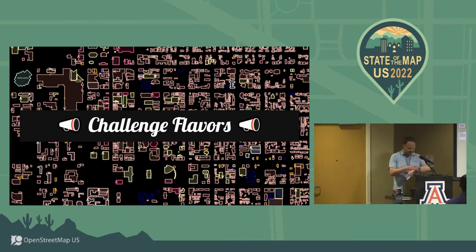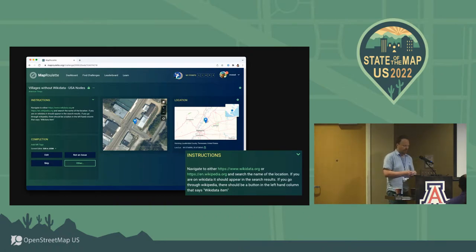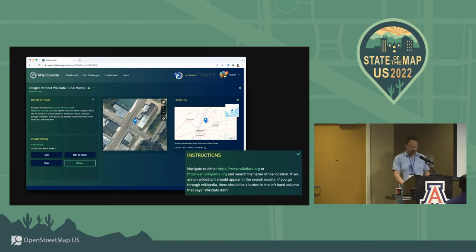So I want to talk a little bit about challenge flavors. The traditional one: check this, fix that — the mapper fixes the map, uploads, returns to MapRoulette and repeats until they've had enough. This is an example: a task that asks people to add Wikidata tags to villages that don't have them. The task is to look those up and add the appropriate tag to the feature in OSM and continue. That's the traditional challenge type that most of you are probably familiar with.